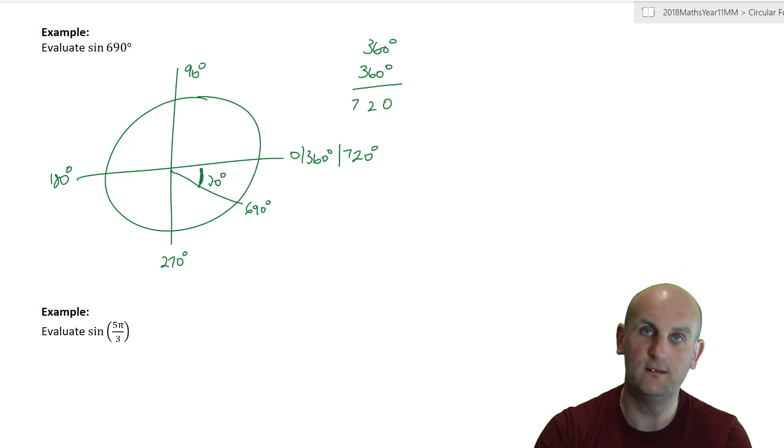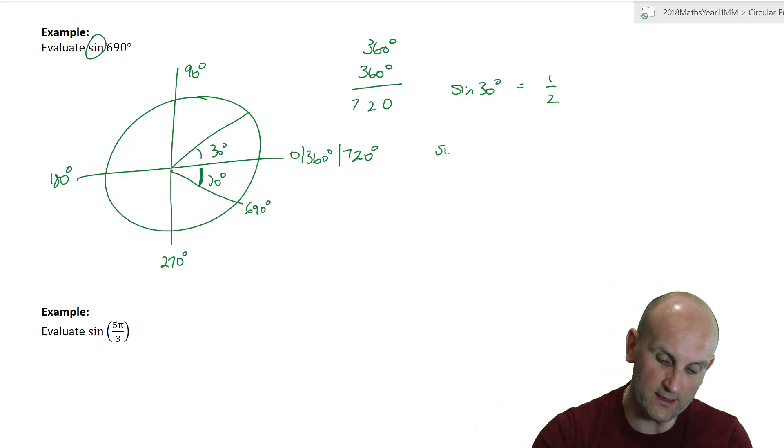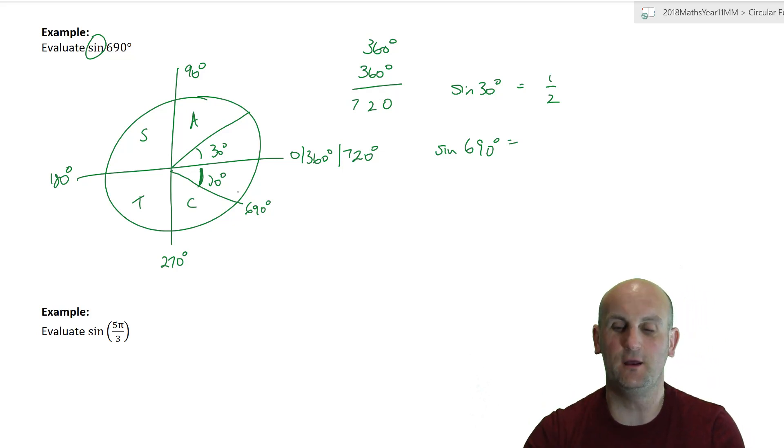So 690 degrees puts me there just before I get around the second time at 720 degrees. See what I'm doing there? So if I now know that this is 30 degrees connected to the x-axis, I now know that my reference angle in this quadrant is 30 degrees. So if I can find the sign of 30 degrees, I can find the sign of 690 degrees. Well, the sign of 30 degrees is a half. It's one of those ones I just remember. And so the sign of 690 degrees is, what do I need to know? What quadrant is it in? And what is positive? So all stations to Canberra. Cos is the only thing that is positive. And so sign must be negative, in which case it becomes minus a half.